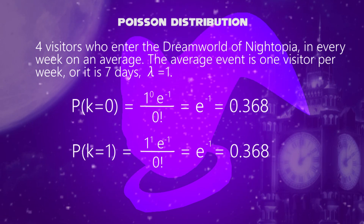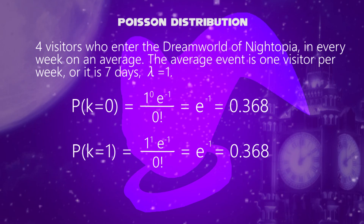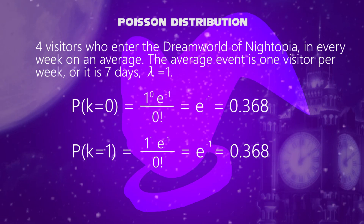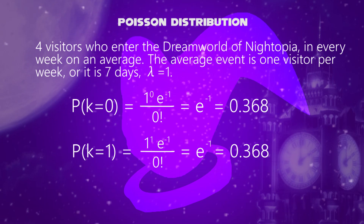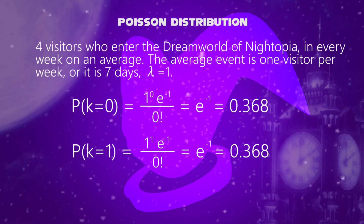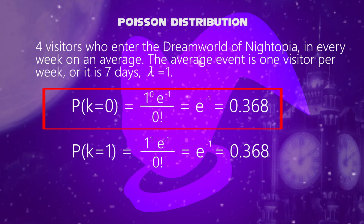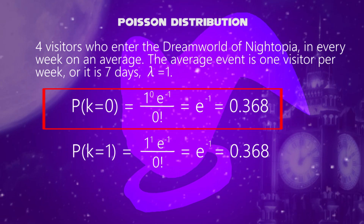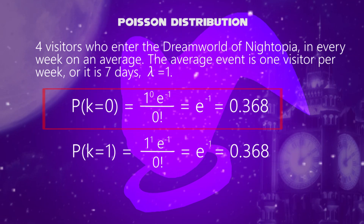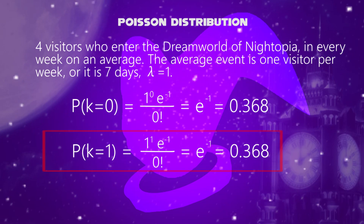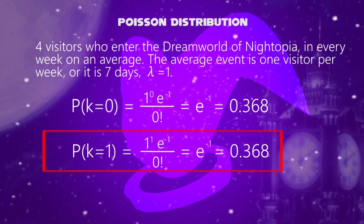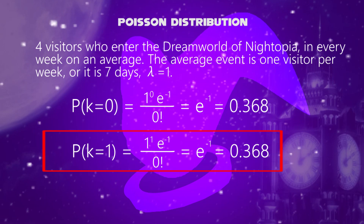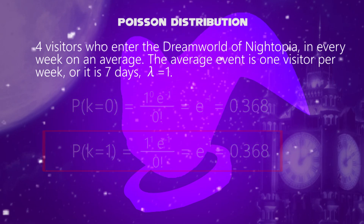When none of the visitors enter, that is k equals zero, we get one to the zero exponent, which is one, times the reciprocal of Euler's number, divided by zero factorial, which is one. Therefore it is 0.368. When one visitor has entered, say k equals one, we get the same value as the previous: 0.368.